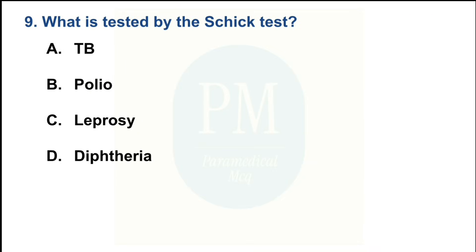What is tested by the Sick test? Option A — TB; Option B — Polio; Option C — Leprosy; Option D — Diphtheria. The correct option is Option D: Diphtheria.